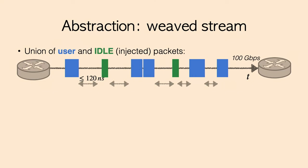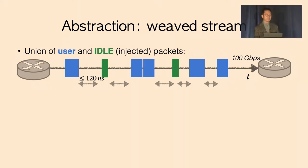To exploit those gaps, OpWeaver introduces WeaveString abstraction, which is essentially a union of user and idle packets traversing arbitrary length between two network devices. From the perspective of someone sitting at the edge of a link, it appears to be a continuous string of packets where the gaps between user packets are padded with idle packets.